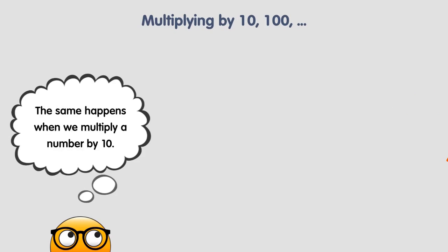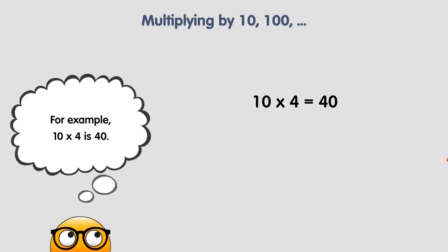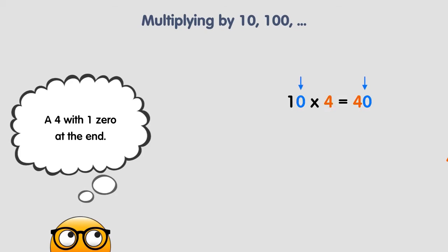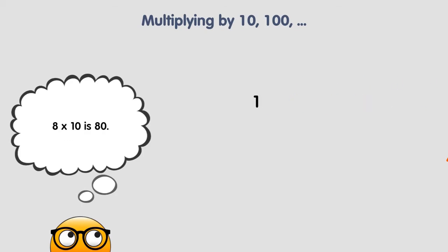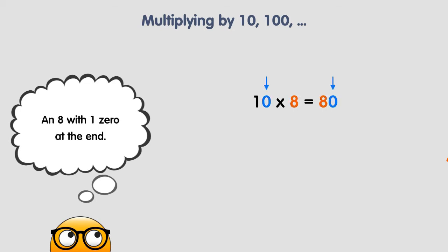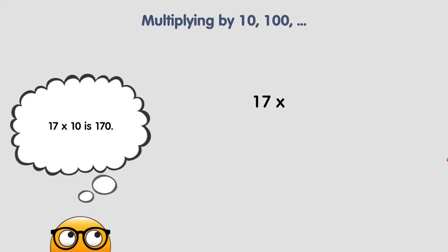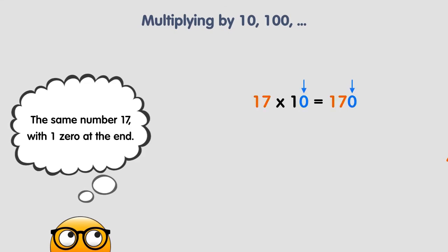The same happens when we multiply a number by 10, but instead of two zeros, we add one zero to the end of the corresponding number. For example, 10 times 4 is 40 — a 4 with one zero at the end. 8 times 10 is 80 — an 8 with one zero at the end. 17 times 10 is 170, the same number 17 with one zero at the end.